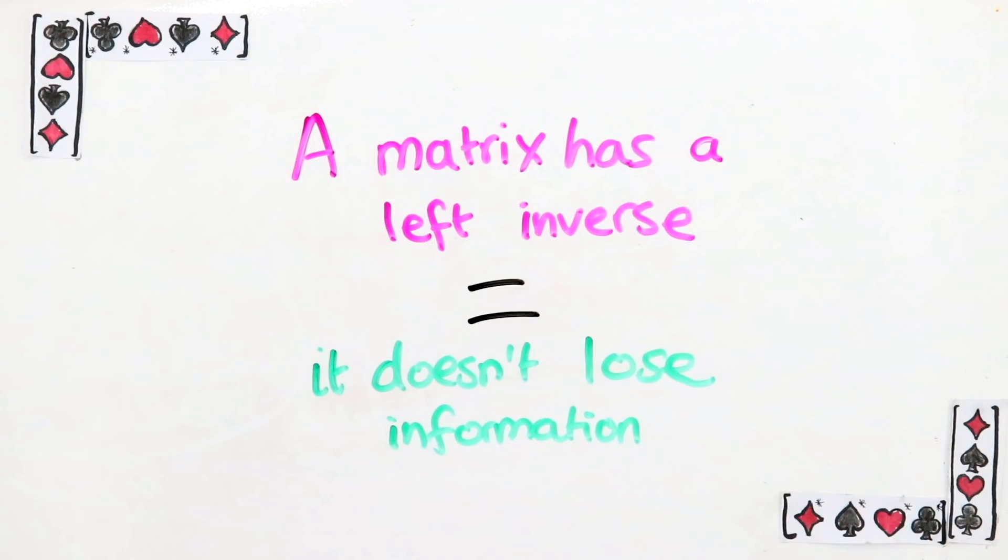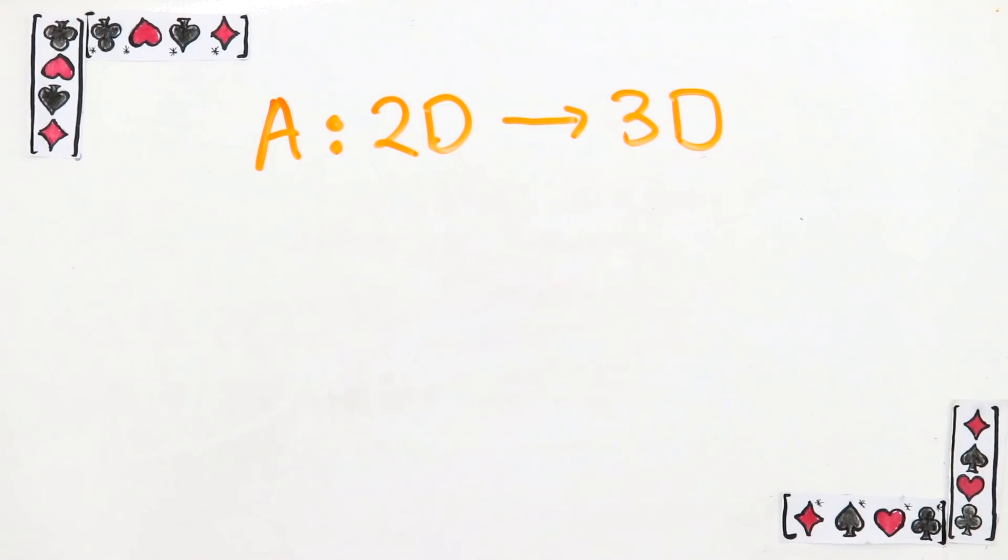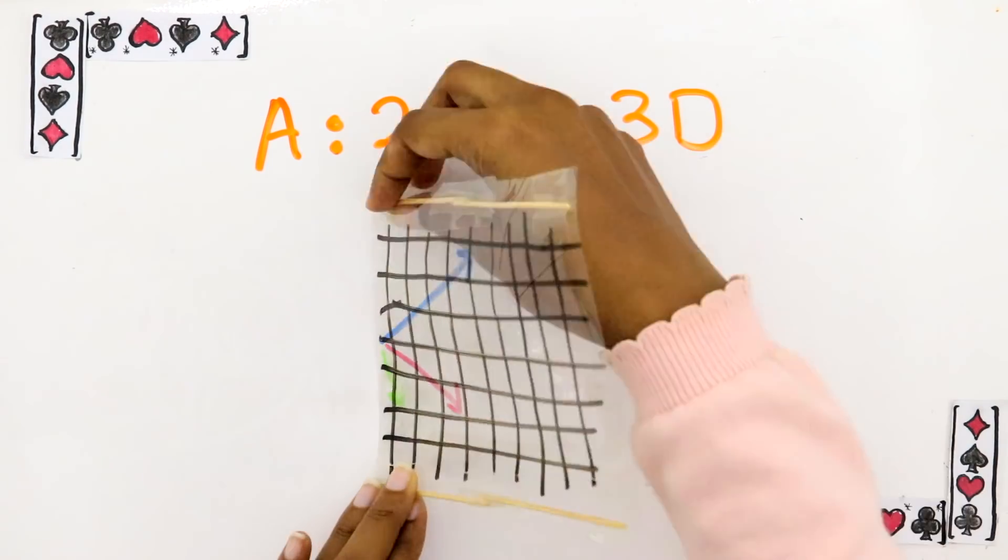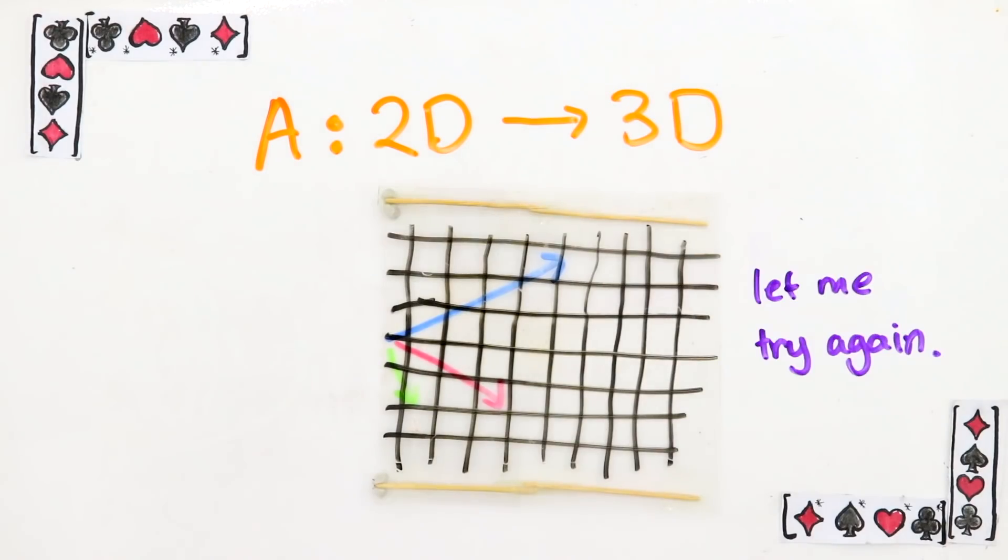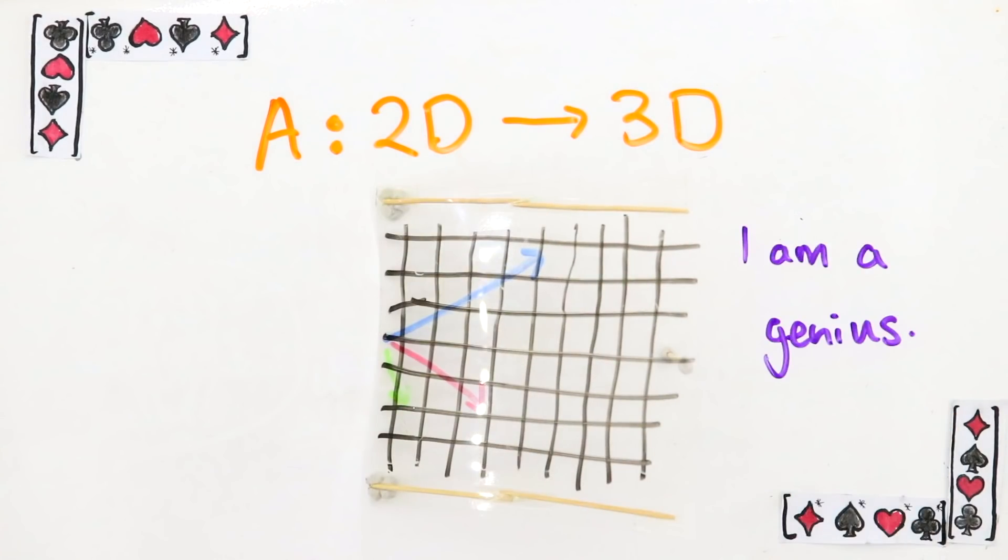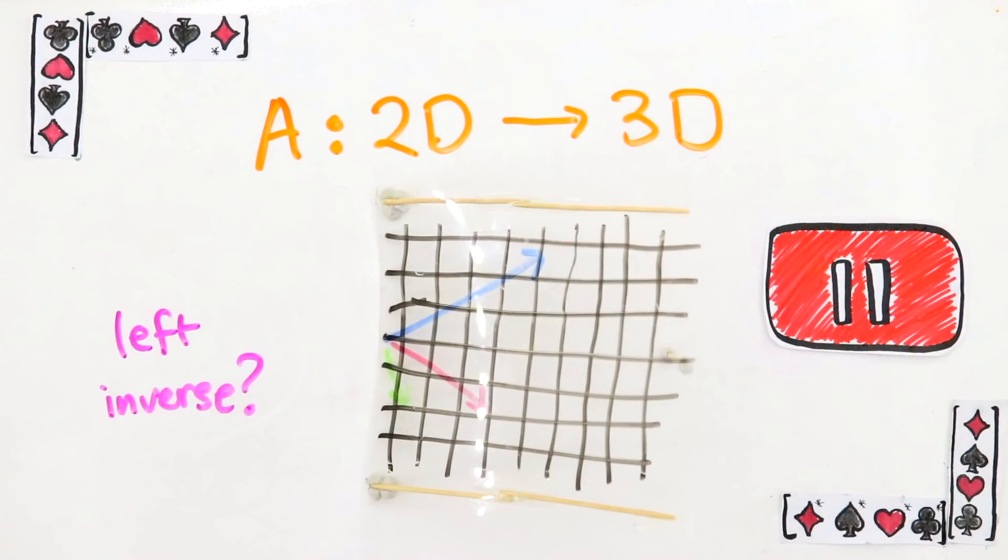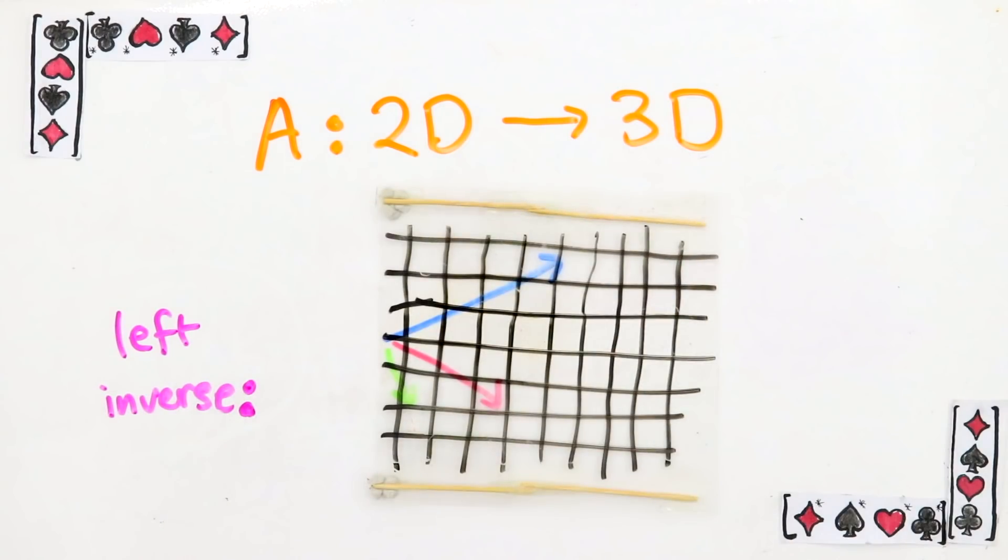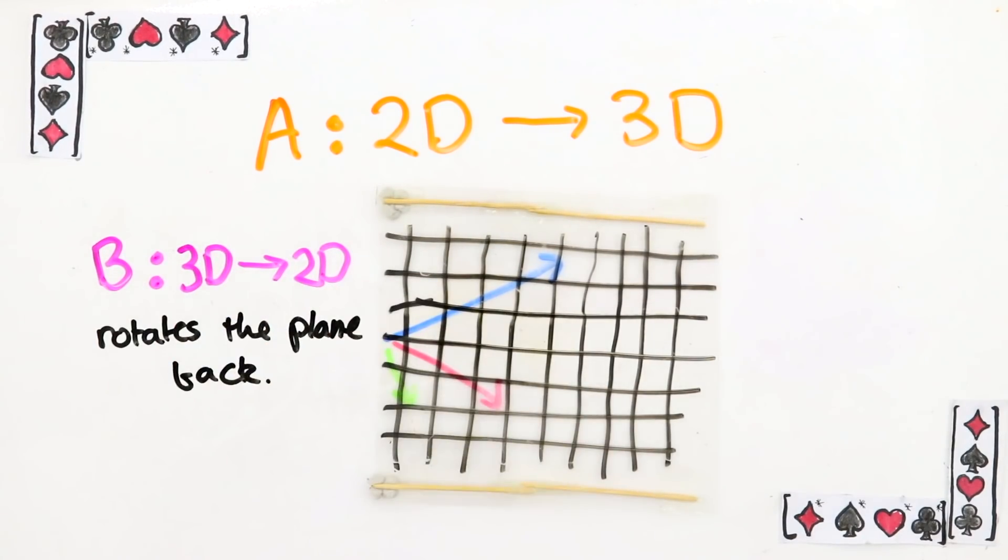Let's look at another example to understand this point better. Imagine I have a matrix from 2D to 3D and what it does is, it rotates any 2D vector into 3D space like this. Does this matrix have a left inverse? Pause the video to think about it. The answer is that it does have a left inverse because A doesn't lose information. If you want to take vectors like this back, you know where they came from so all you have to do is rotate this plane back.